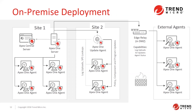Here's an example deployment showing two different sites. Site one might be your workplace or data center. On the left you have the Apex Central server and the Apex One server connecting to all Apex One agents. In site two, there's no Apex Central or Apex One server. Instead, one protected agent becomes an update agent, serving policy, component, and program updates to other agents in that segment. Log uploads and smart protection lookups still go directly to the Apex One server, but those are low bandwidth.